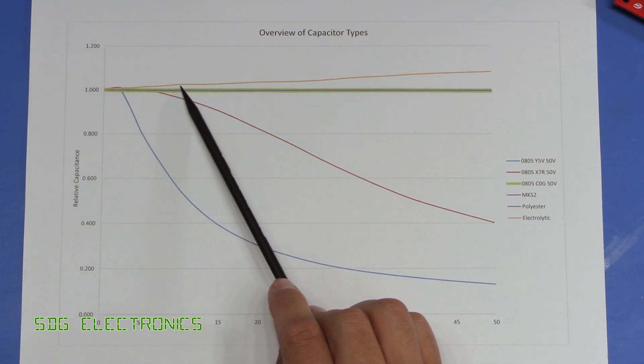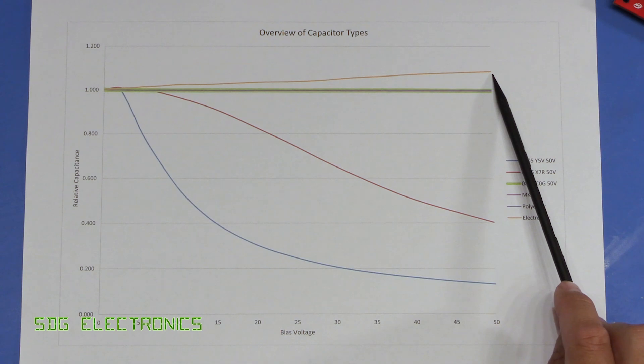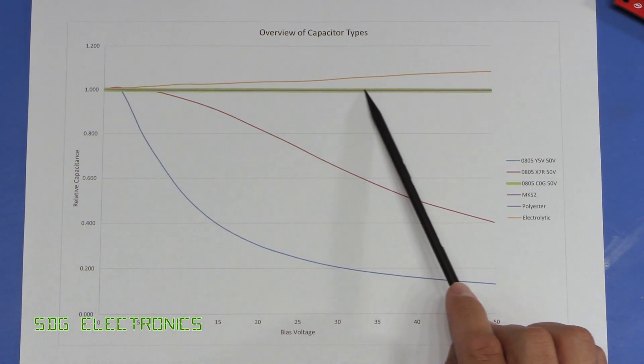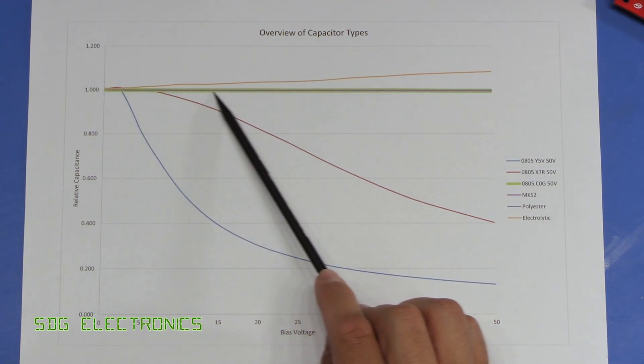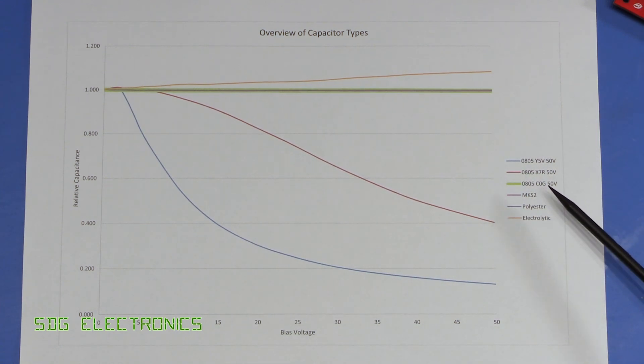Then we've got an electrolytic in orange here and that actually increased in capacitance with voltage. And then we've got three overlapping lines here which are very stable across the band, and that is the class 1 ceramic, so a C0G or an NP0 ceramic capacitor. Those are excellent but they're generally not available in higher capacitance values.